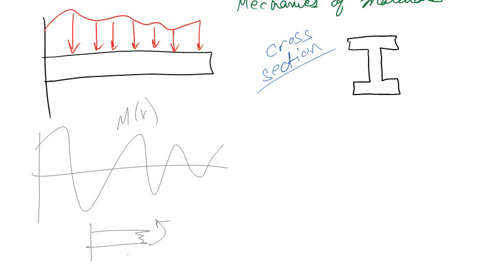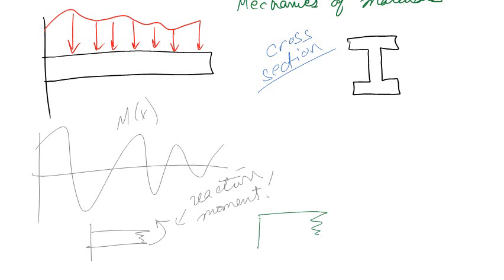Whether it's positive or negative, if I cut the beam, I'd have some kind of bending reaction moment. So you have this bending reaction moment. Now, instead of calling it a reaction moment, what I could do is say: what if I got super close, and instead of having a reaction moment around the Z-axis, I rewrote that as a force here and a force here? It's a couple moment.